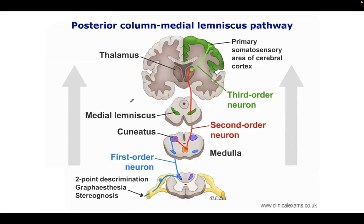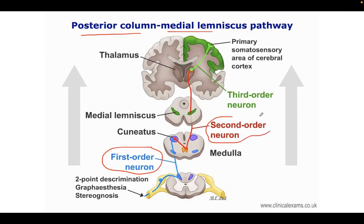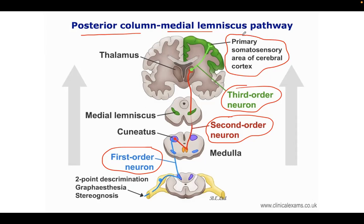The posterior column medial lemniscus pathway is comprised of the posterior columns of the spinal cord and the medial lemniscus — two structures: posterior columns or dorsal columns of the spinal cord, and the medial lemniscus pathway of the brain. From the thalamus, it sends signals not to the motor cortex but to the primary somatosensory area of the cerebral cortex, because it relays sensory information. Ascending is sensory; descending is motor.